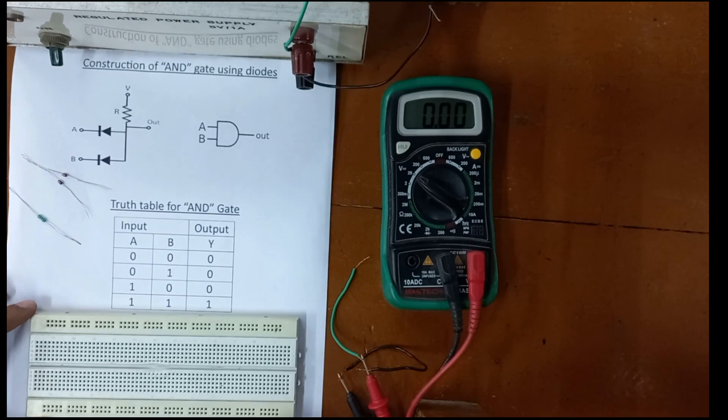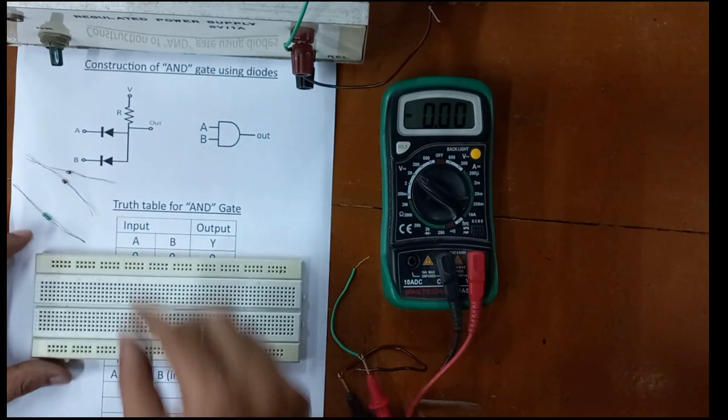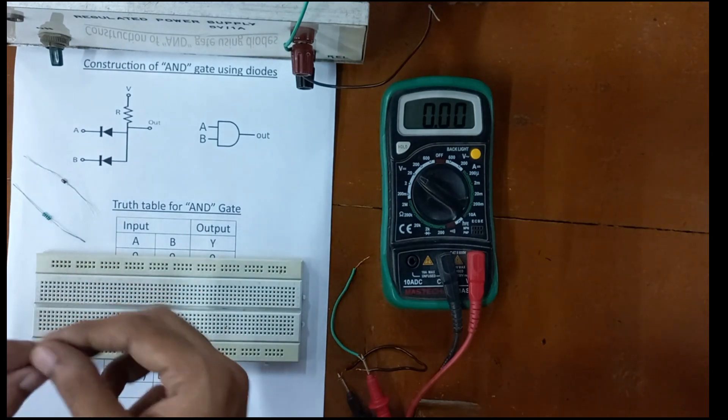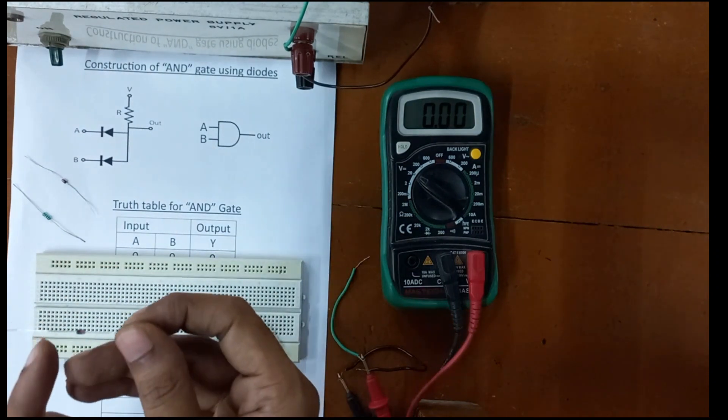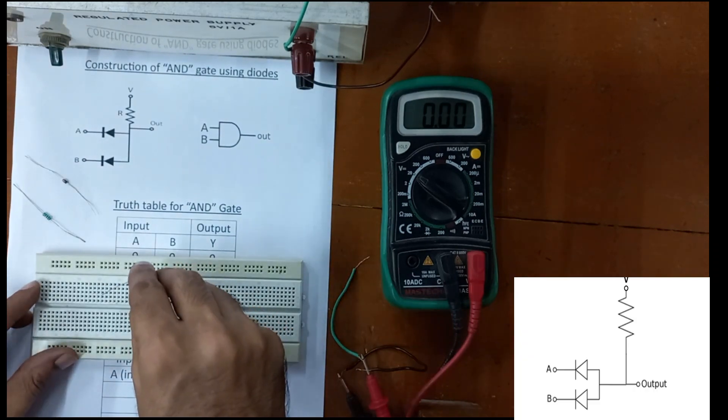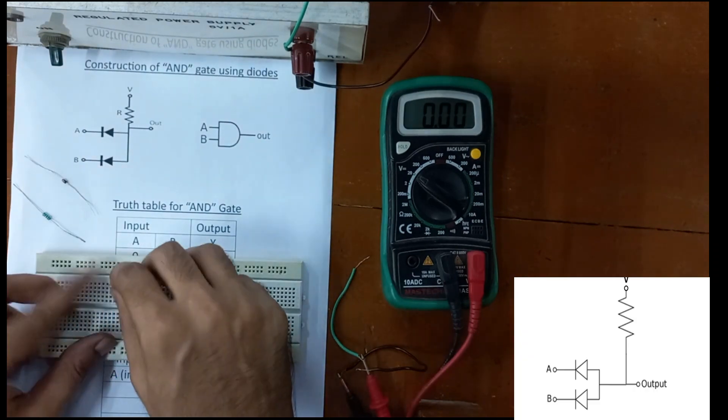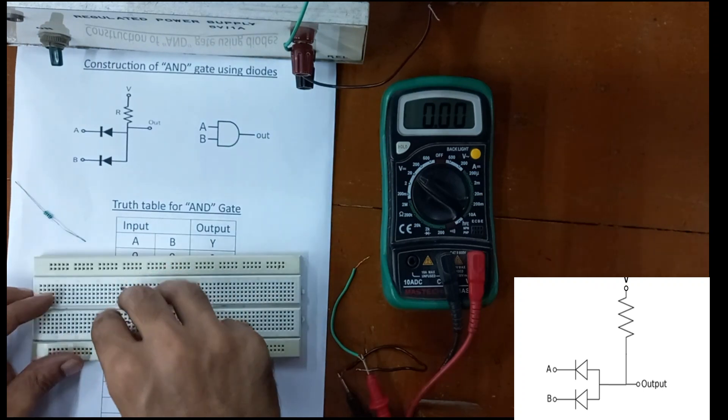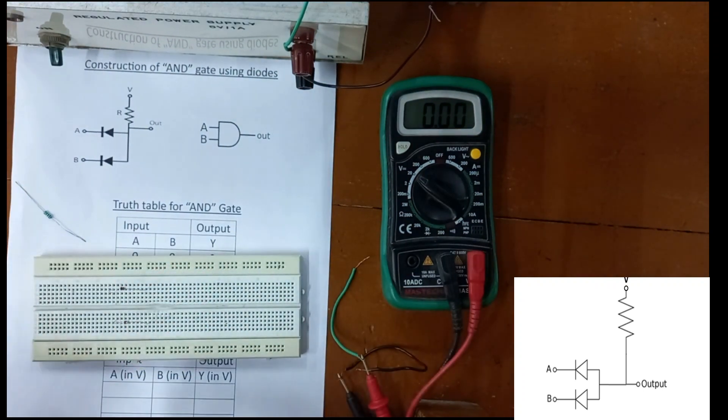To begin with, let's construct this circuit. We need to connect the diodes, keeping in mind that the N side should be facing the input and the P sides are connected together. Let's connect the P sides using a wire.